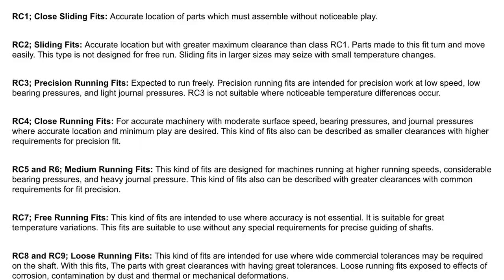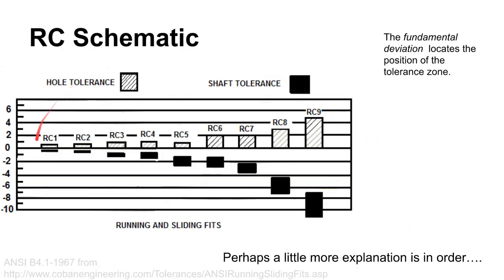There are different categories of RC fits, and again the smaller the number, the tighter the fit. RC1 is a real close sliding fit — parts that assemble together without any noticeable play; these will actually be air tight. As you get to smaller gaps, they give a good pop when you pull them apart, or may even be hard to put together because of trapped air. Sometimes parts with really tight fits have a small hole for air to escape.